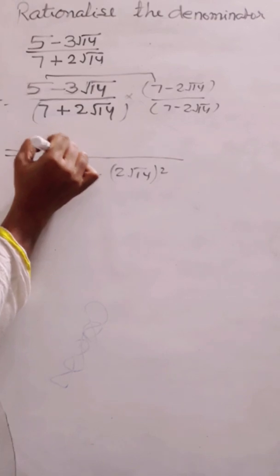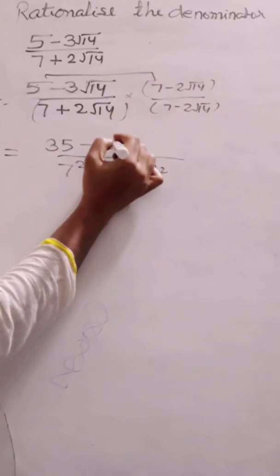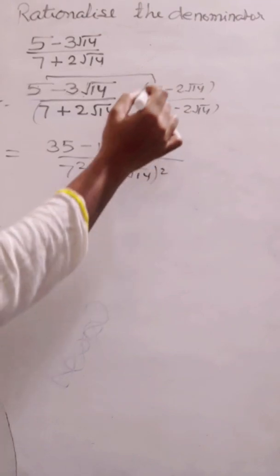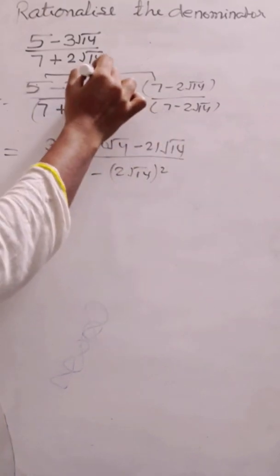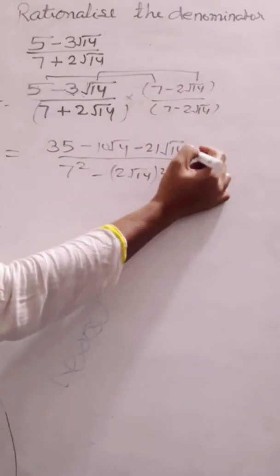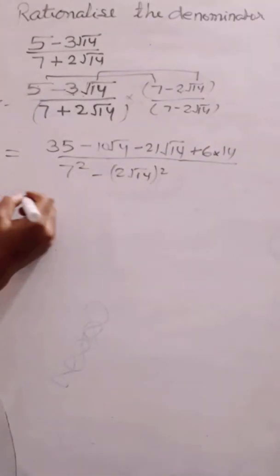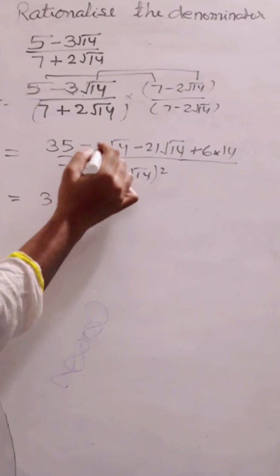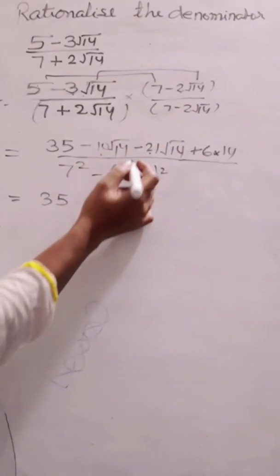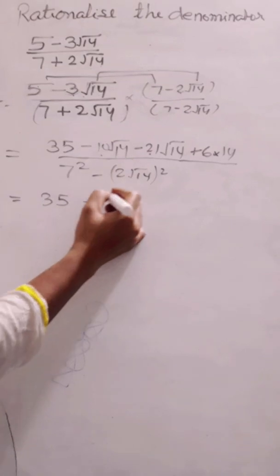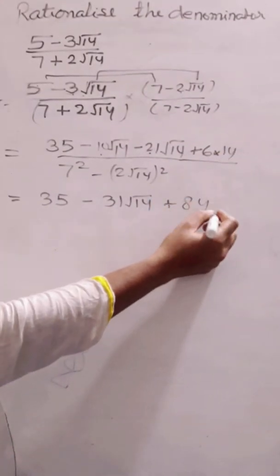In the numerator I multiply out: 5 times 7 gives 35; 5 times minus 2 gives minus 10 root 14; minus 3 root 14 times 7 gives minus 21 root 14; and minus 3 times minus 2 gives plus 6, with root 14 times root 14 giving 14, so plus 84. The terms minus 10 root 14 and minus 21 root 14 are like terms, combining to minus 31 root 14. So the numerator is 35 + 84 minus 31 root 14.